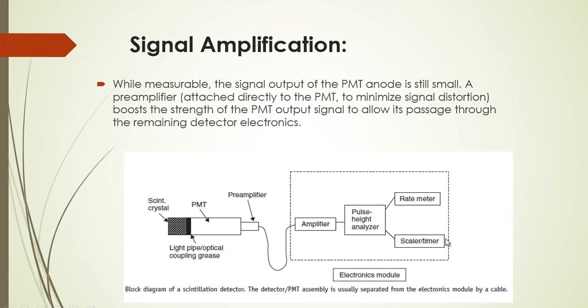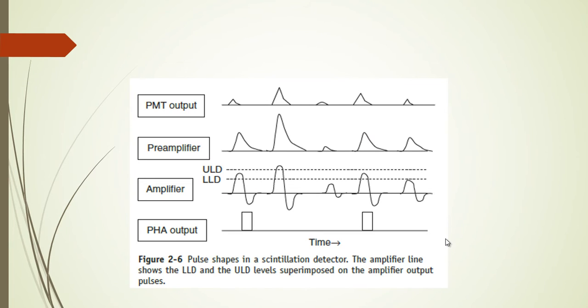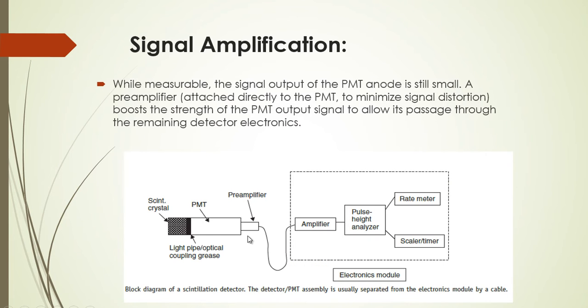The next component that we have is a scalar which is basically a counter. You can set the scalar to have a preset time of like a minute or 50 seconds. What it does is it counts the number of truth pulses from the PHA within that time period. So that's the remaining electronics associated with the scintillation counter.